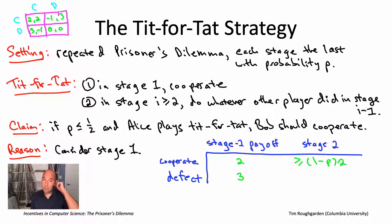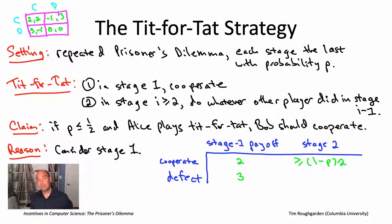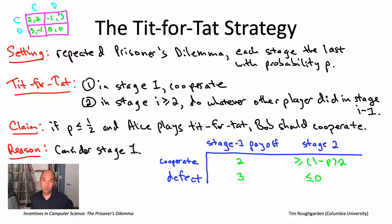On the other hand, suppose Bob defects in stage one. Since Alice is playing tit-for-tat, Alice will defect in stage two. Now Bob is going to get a much lower payoff in stage two because Alice is defecting — he'll get a payoff of zero, one, or minus one depending on whether he defects or cooperates. In any case, he'll be getting a payoff of zero or worse in stage two.